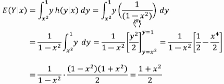Now 1 over 1 minus x squared doesn't depend on y, so we can pull it through the integral, and we're left with integrating y dy over the support y from x squared to 1.